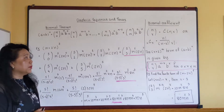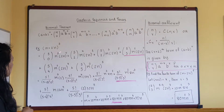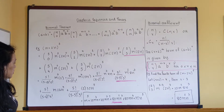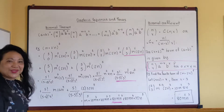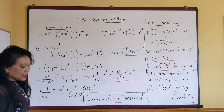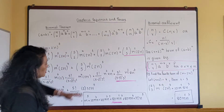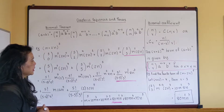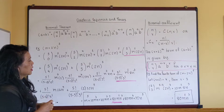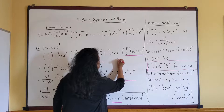We have six terms total, so it's going to take a long time to calculate everything. Let's say we only want the fourth term. The easiest way would be using the calculator: your n is five, so punch in five choose three.